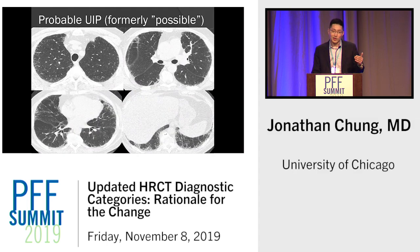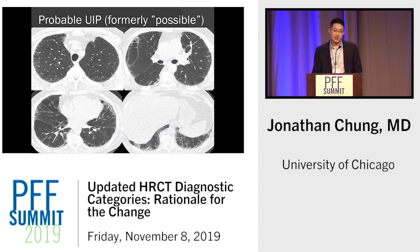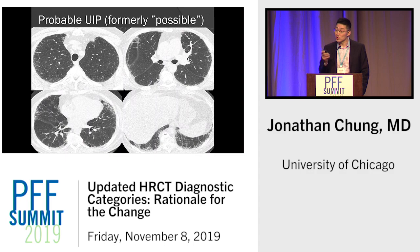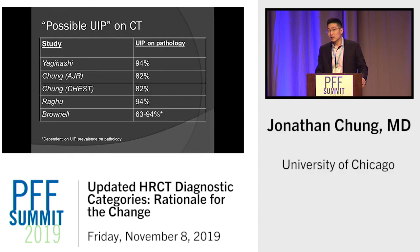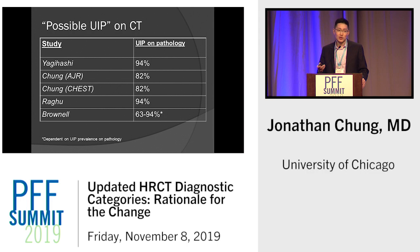Let's talk about probable UIP first, formerly known as possible UIP. This is a classic example: peripheral basal predominant pulmonary fibrosis characterized by reticulation, with some mild traction bronchiectasis and bronchiolectasis at the lung bases, but no evidence of subpleural honeycombing and no findings suggesting an alternative diagnosis. If you look at the literature for patients with this formerly possible UIP pattern, the diagnostic yield for UIP on pathology is somewhere in the 80 to 90 percent range. If you're older than 60, that's above 90 percent.